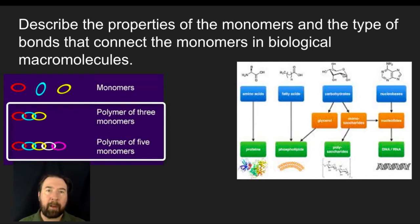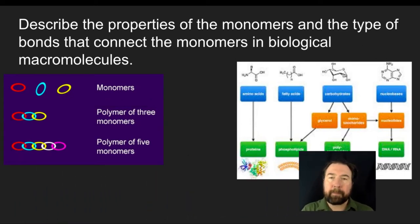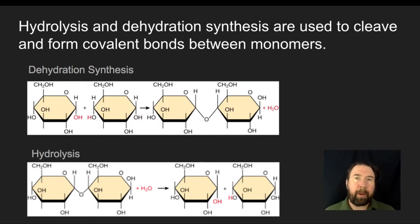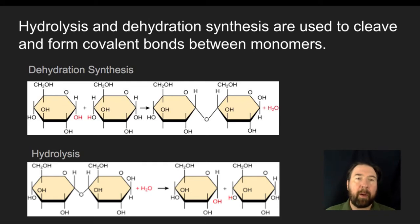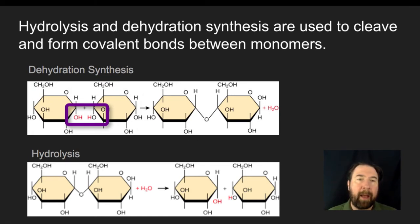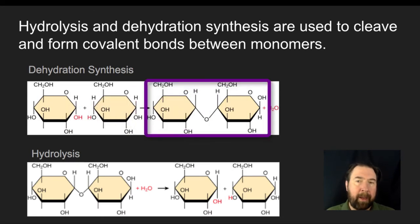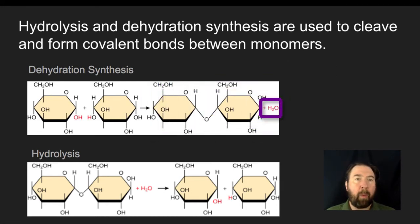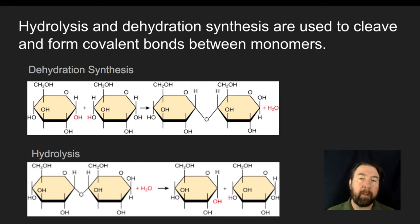Polymers occur when we string monomers together and make a chain. There are ways of putting together or breaking apart these polymers using either dehydration synthesis or hydrolysis. In dehydration synthesis, we have two monosaccharides — a hydroxyl is highlighted on one and a hydrogen on the other. Removing the hydroxyl from one and the hydrogen from the other causes the two monosaccharides to bind together to form a disaccharide, losing water in the process. Repeating this process builds from a monomer to a dimer to a trimer and ultimately to a polymer.